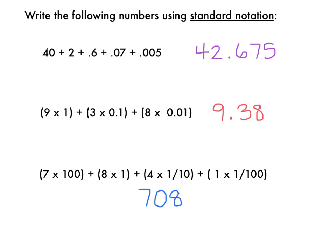So this number is going to be 708, and 4 times 1 tenth would be 4 tenths, and 1 times 1 one-hundredth would be 1 hundredth. So this number is 708 and 41 hundredths.